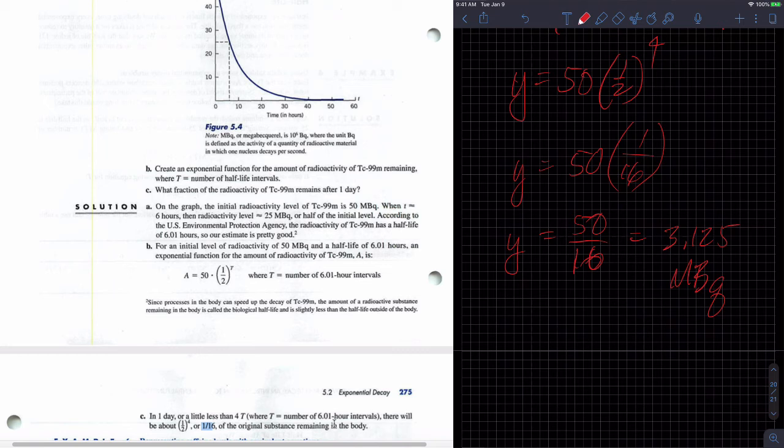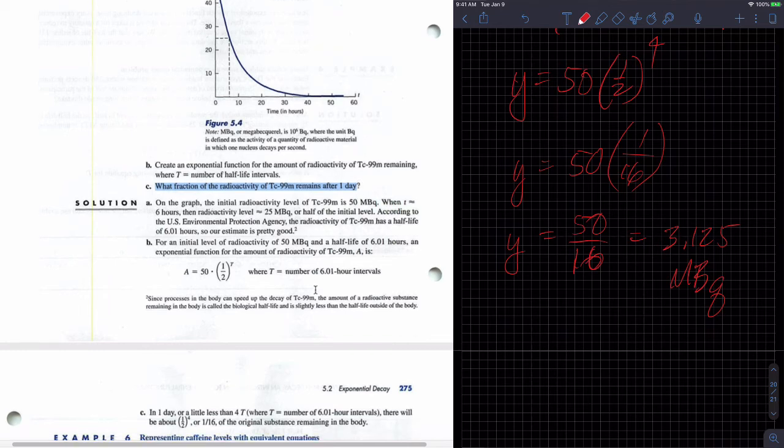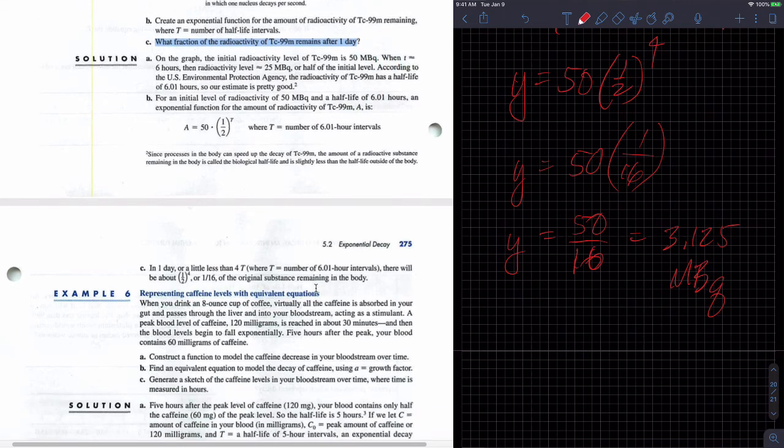And then part C, they get 1 16th of the original. So 1 16th of the original, but we took 50 and divide it by 1 16th. And so we get the actual amount is 3.125. Did they say, oh, what fraction? So it would have been 1 16th, since they were saying, don't worry about how much you started out with. So 1 16th is the correct answer.